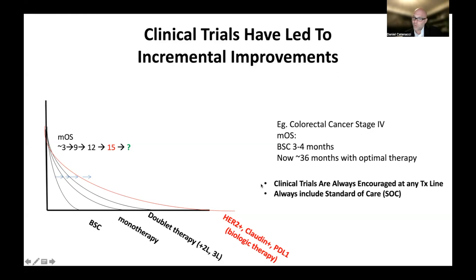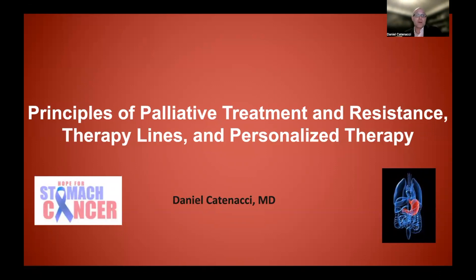Clinical trials are always encouraged in any line and any situation in this setting because there is room for improvement. In summary, this introductory video about therapy in the stage 4, unresectable, or recurrent situation covered therapy lines, treatment resistance, the goals of therapy in terms of optimizing quality of life by treating the cancer and limiting side effects, and ultimately personalizing any therapy regimen to the given individual and their goals. In the following videos, we're going to talk specifically about chemotherapy — both two-drug and three-drug regimens — and then go into each of the biomarkers and their matched targeted therapies and immunotherapies when indicated.